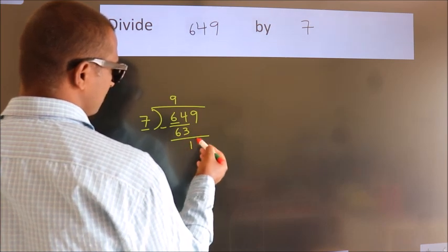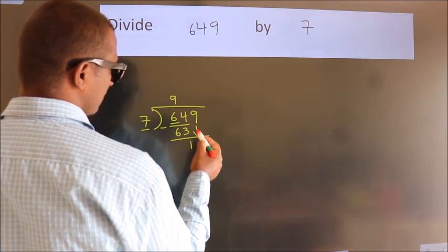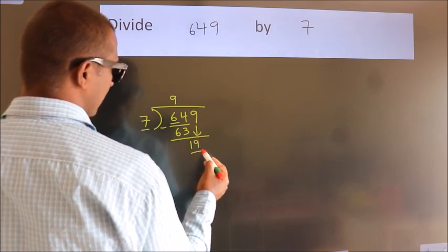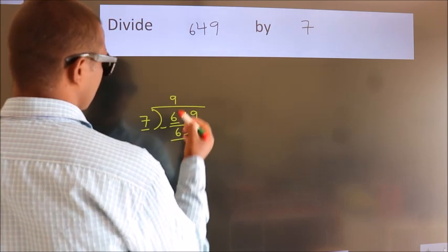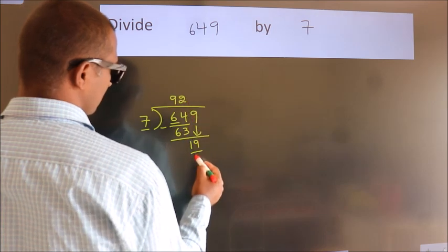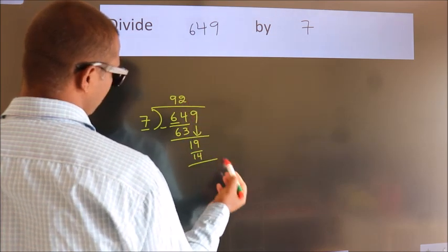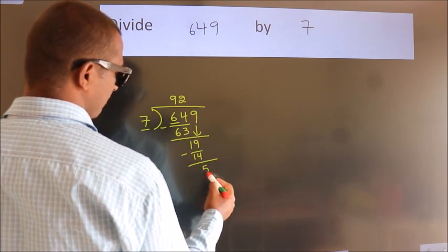After this, bring down the beside number. So 9 down. So 19. A number close to 19 in 7 table is 7 times 2, 14. Now we subtract. We get 5.